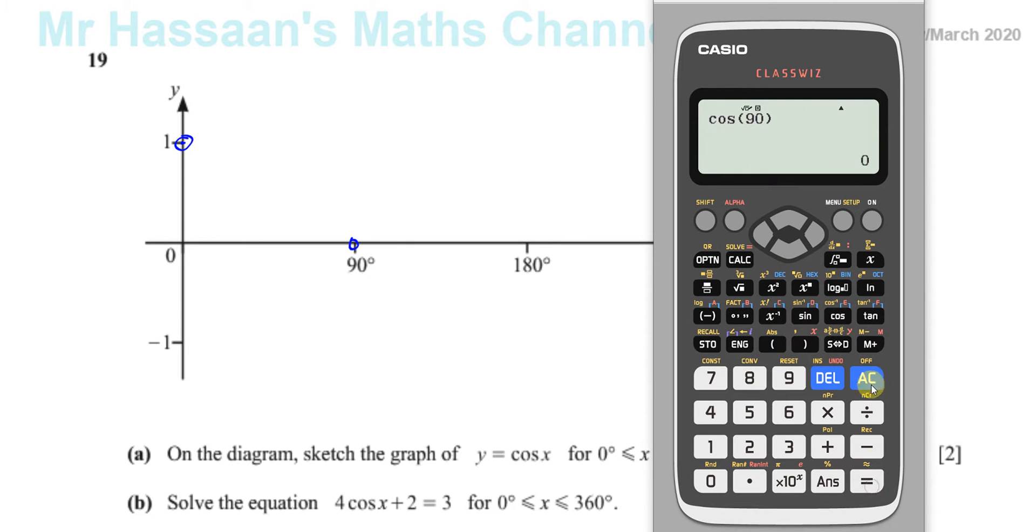It's going to be zero, I know that. That's zero. And cosine of 180° is going to be minus 1. Again, you can check in case you're not sure. Yep, that's minus 1, so it's going to be down here somewhere.